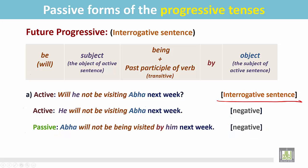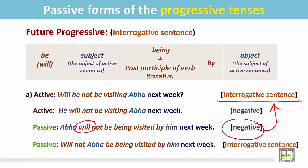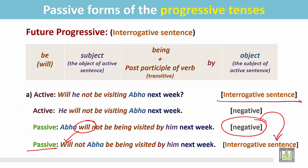Now change this statement into an interrogative sentence. Put the be verb at the beginning of the sentence — this changes the statement into an interrogative sentence in the passive: 'Will not Abha be being visited by him next week?'